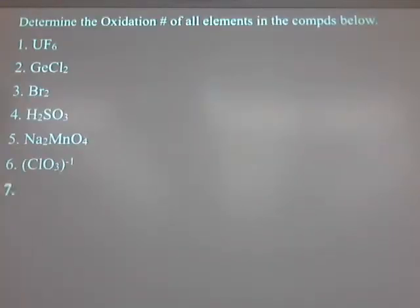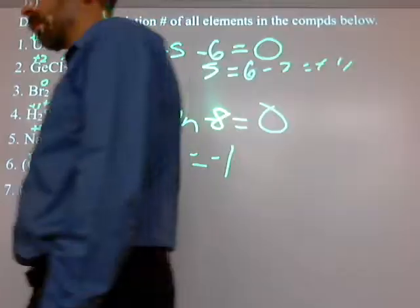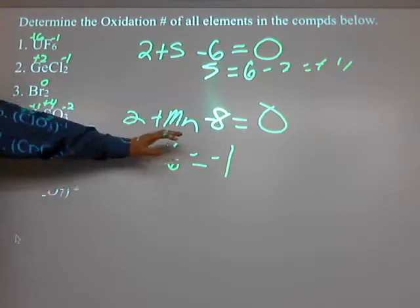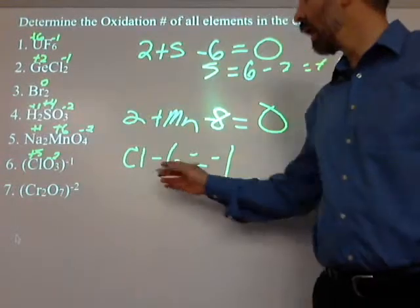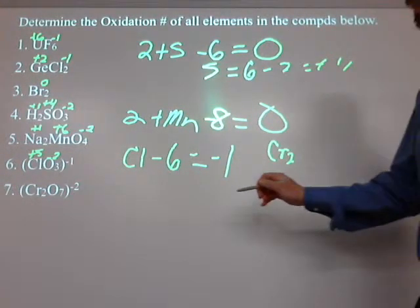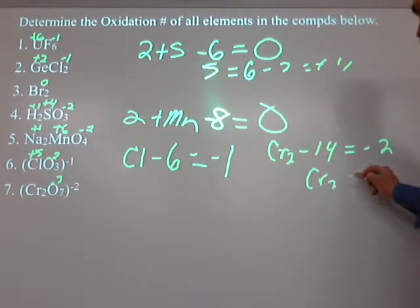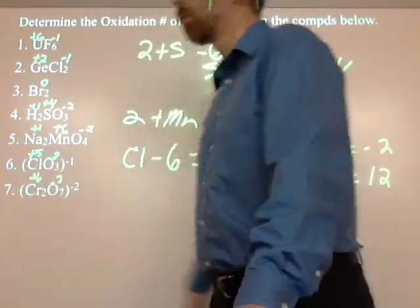A couple more. Cr2O7 with a minus 2. There's another little twist to that guy. He's a polyatomic ion, yes, but he's got another little twist: the fact that I've got two chromiums in there. You do not need to do the algebraic things on homework or test. But for this one you might have to. I've got chromium, Cr2, and I've got oxygen, 7 times minus 2 is minus 14. And the whole thing equals negative 2. So Cr2 equals 14 minus 2 or 12. So what's each Cr have to be? Plus 6.